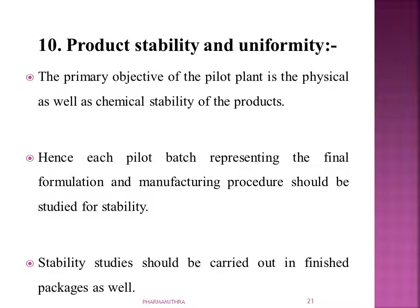The tenth consideration is product stability and uniformity. The primary objective of the pilot plant is to ensure the physical and chemical stability of the product. Each pilot batch representing the final formulation and manufacturing procedure should be studied for stability, because our aim is to maintain the stability of the final product. If it is stable, it should also be uniform. Therefore, stability and uniformity studies are carried out from the initial step of raw material receipt through to the finished packaging.